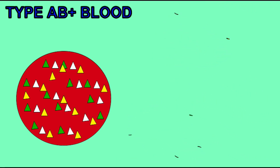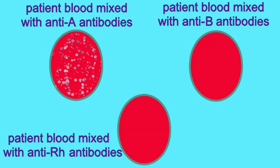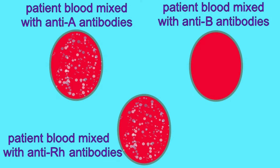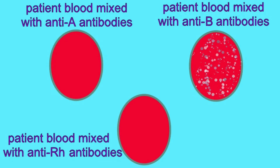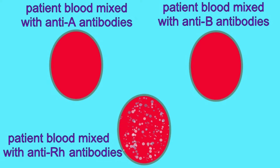You add antibodies which will clump blood which has an A glycoprotein on red blood cells in the first well. You add antibodies which will clump up blood type B in a second well. You add antibodies which will clump the Rh factor in a third well.